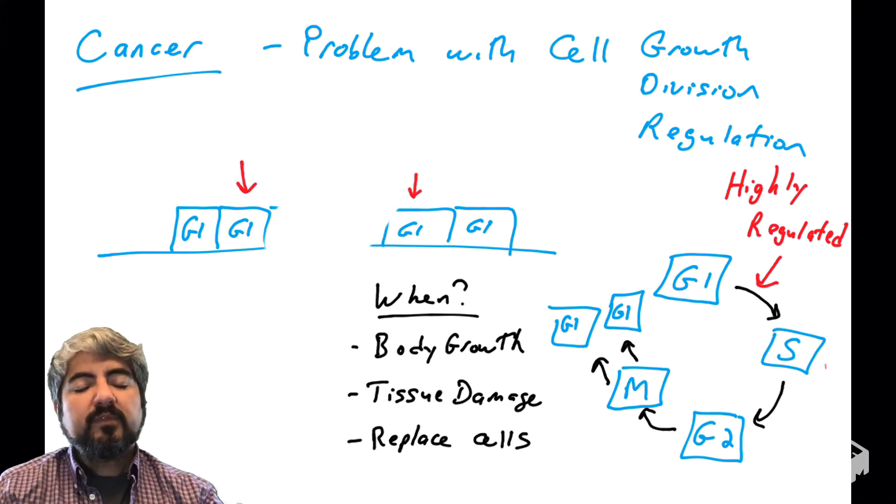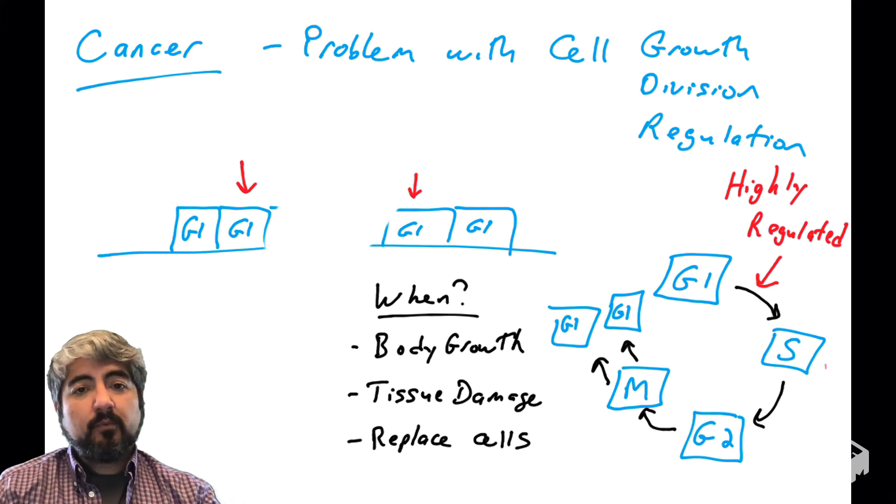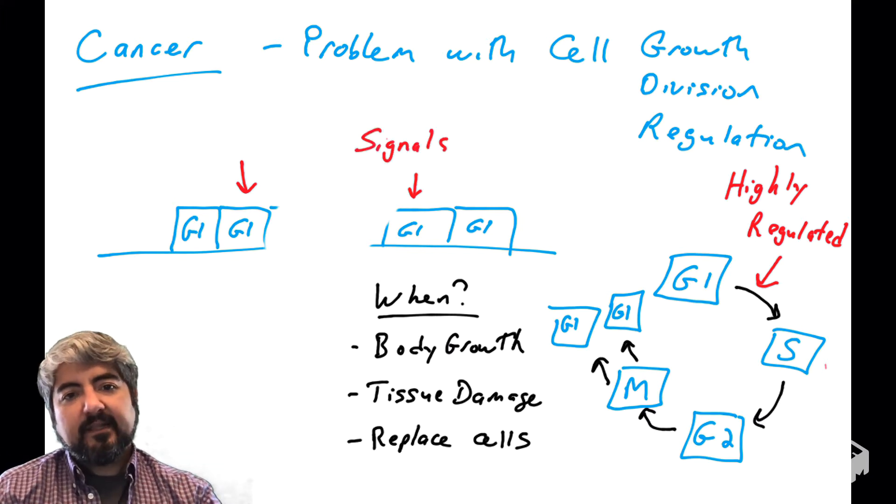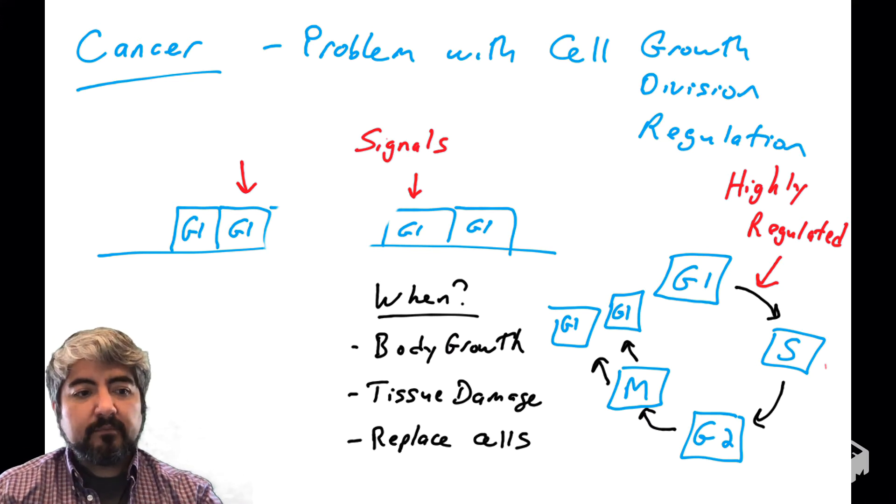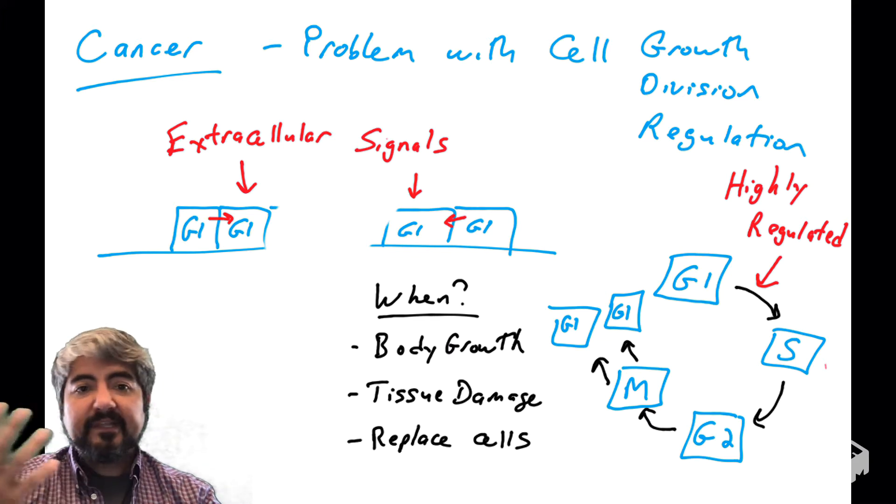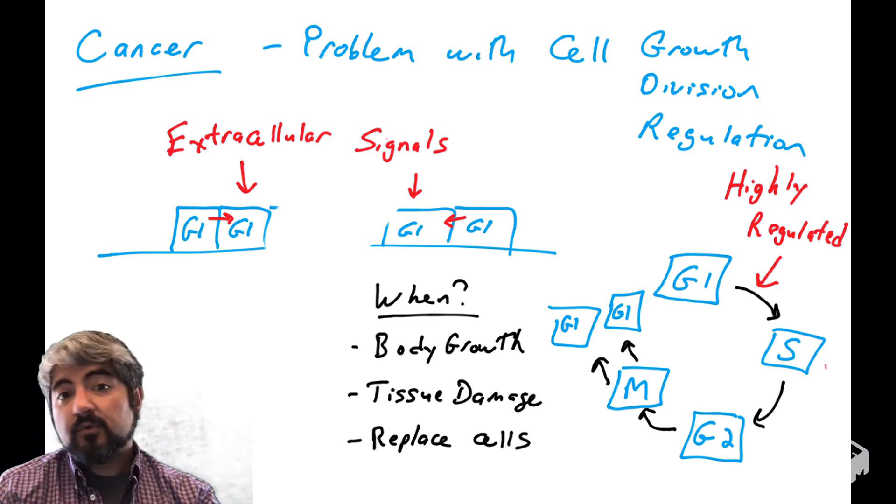So how do these cells know to make more cells? Cells get signals from other cells. And these signals can be in all sorts of different forms. They can come from outside the cell, soluble signals, like we're going to learn about growth factors.